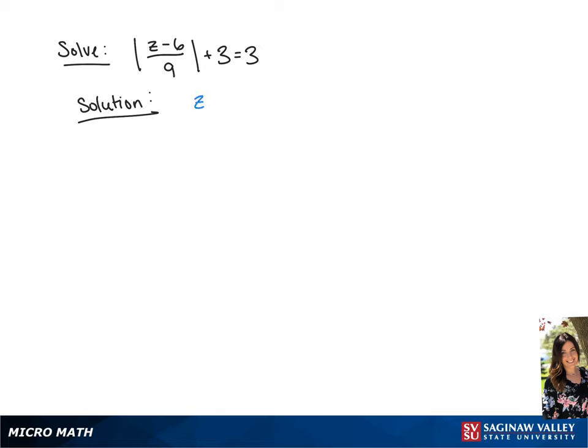We have the absolute value of z minus 6 over 9 plus 3 equals 3. We're going to subtract 3 from each side, giving us the absolute value of z minus 6 over 9 equals 0.